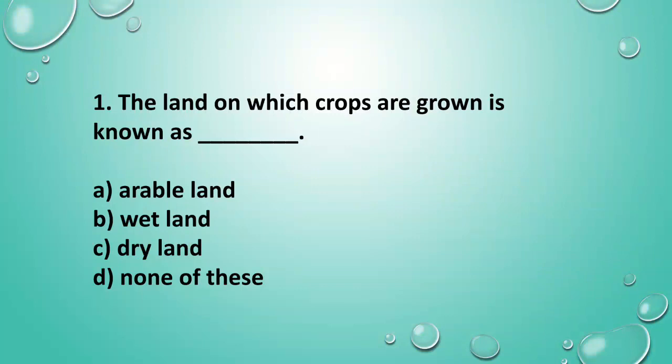Question 1: The land on which crops are grown is known as ___? The answer is option A — Arable land.